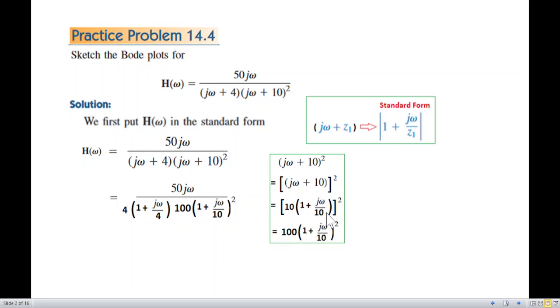So this is the standard form. In the square root it is 100 times 1 plus j omega by 10 squared. Now we simplify it.